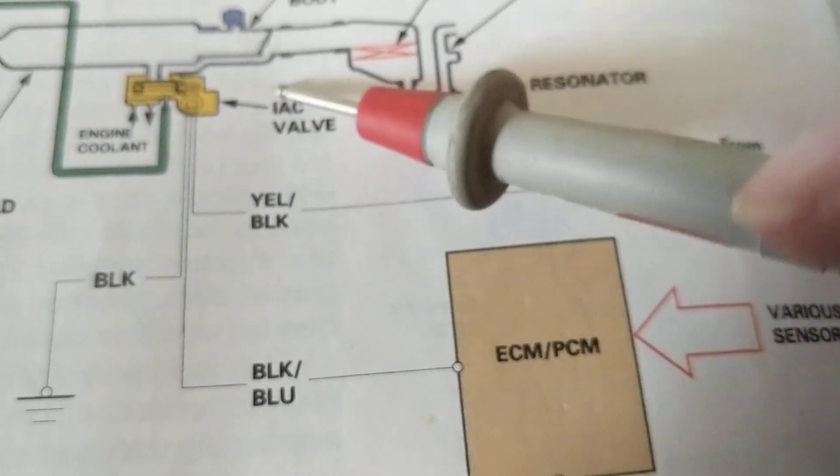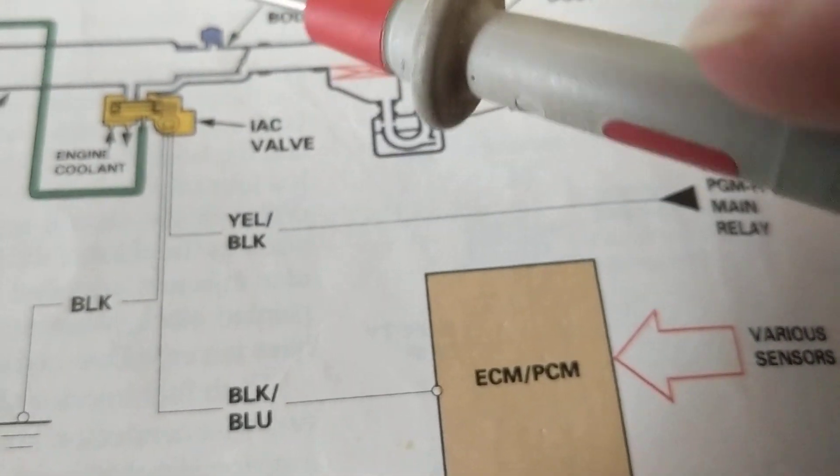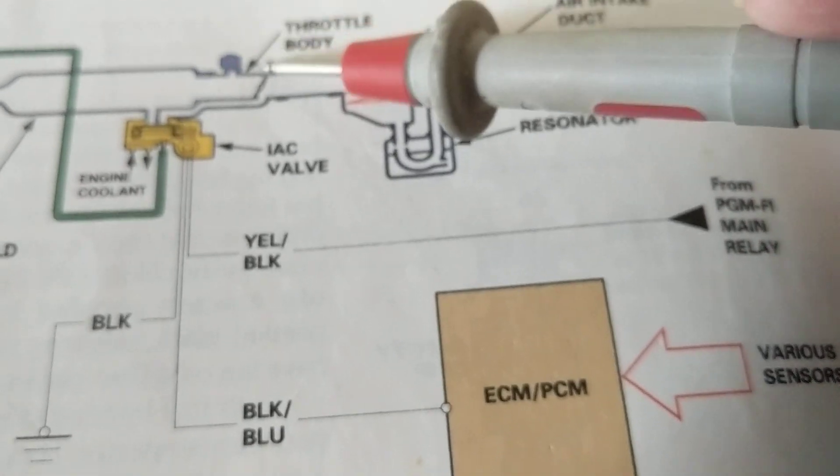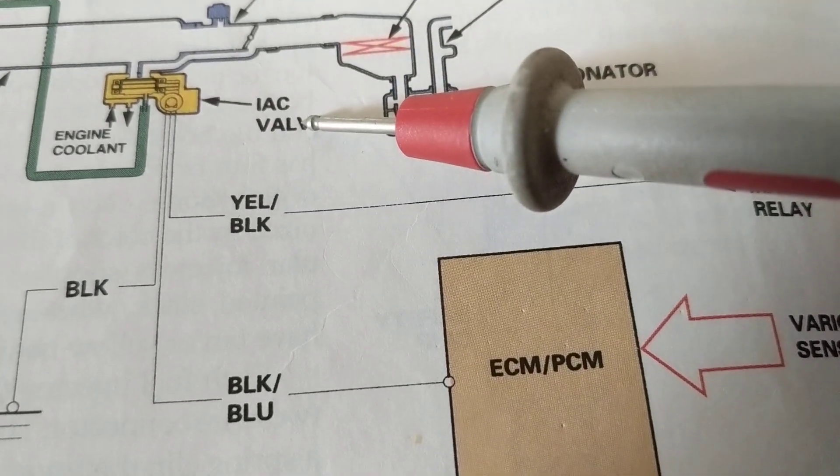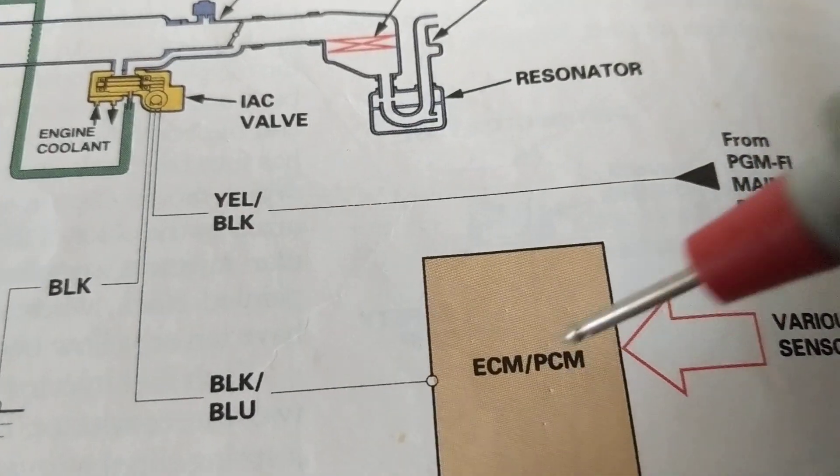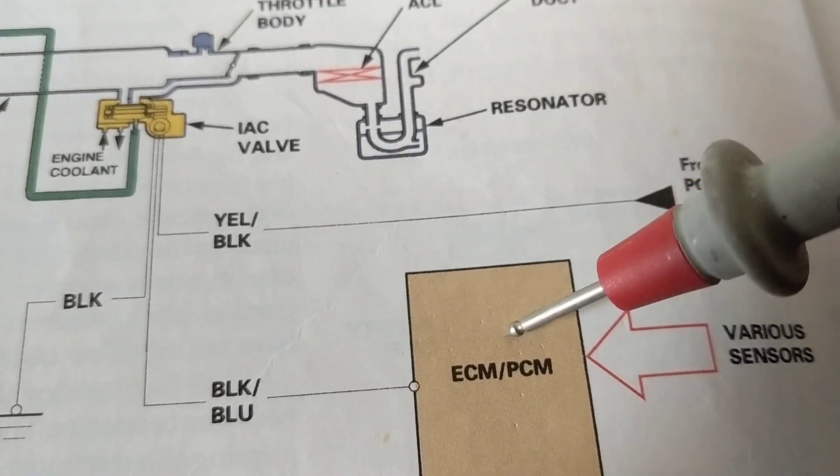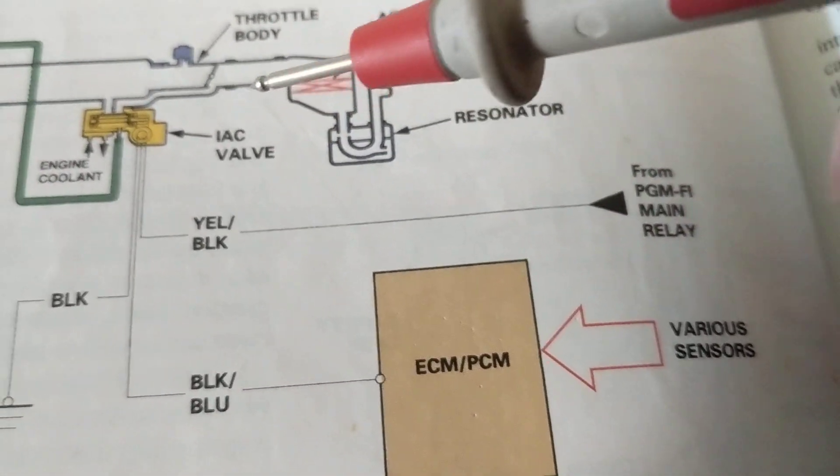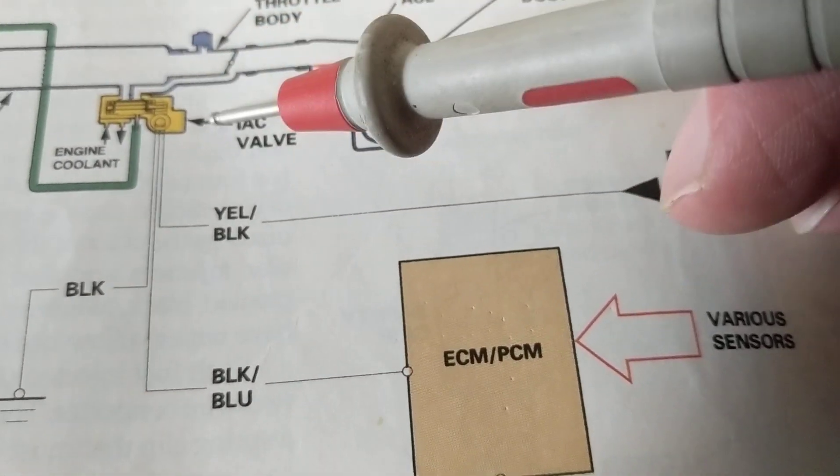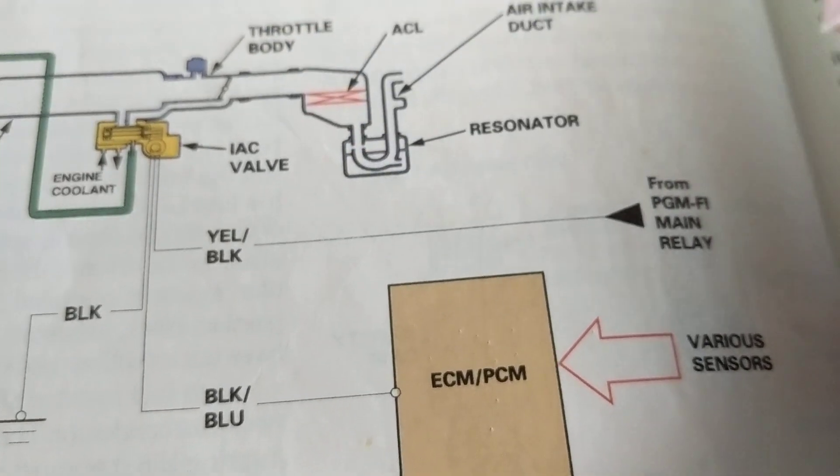But gradually it should come down, obviously, to 500, 600 RPM, whatever it is. So you can't blame the computer. You know why? He's doing his job. He has a long time to warm up that engine. That's why he's telling the valve, open up more because I got to let more fuel in.